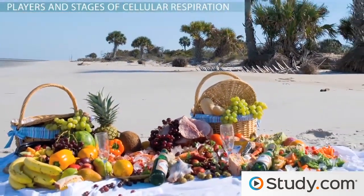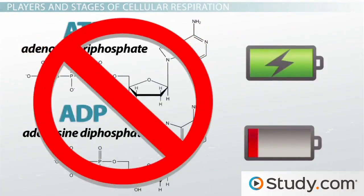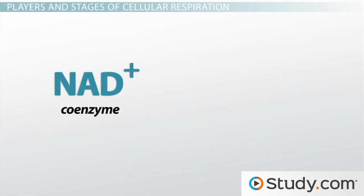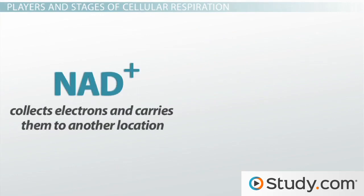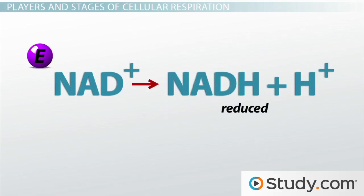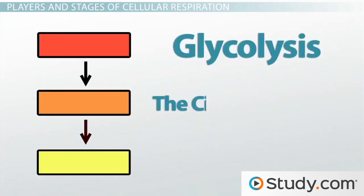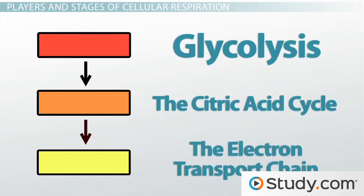The last player in this chemical process we should remind ourselves of is not included in this equation. In our cells, we also have nicotinamide adenine dinucleotide, or NAD+, which is a coenzyme. NAD+ collects electrons and carries them to another location. When NAD+ picks up an electron, it becomes reduced and is now represented as NADH. Creating ATP through cellular respiration is a long process. It occurs in three stages: glycolysis, the citric acid cycle, and the electron transport chain.